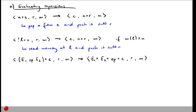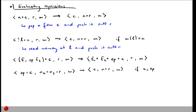Once E1 and E2 have been evaluated, we reach a state where just the operator is left on the control stack, and values N2 and N1 are on the result stack. We then execute the operation by removing it from the control stack and pushing the result N onto the result stack. The memory stays the same. N is the result of applying operator op to N1 and N2 — for example, if op is plus, N is N1 + N2.